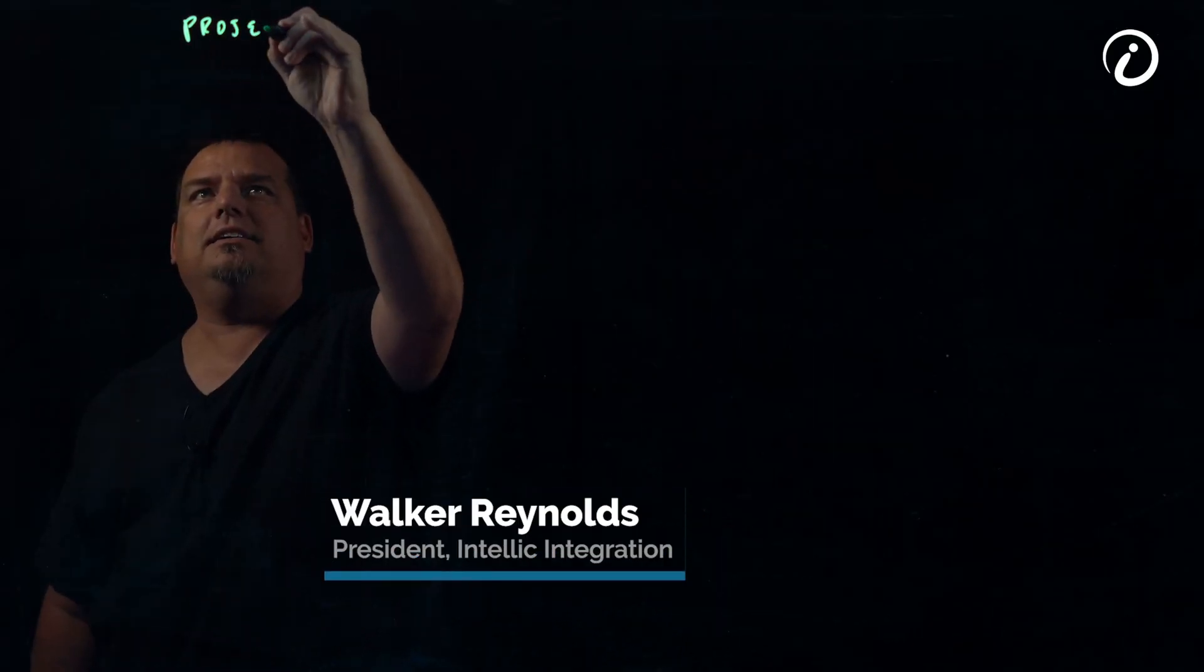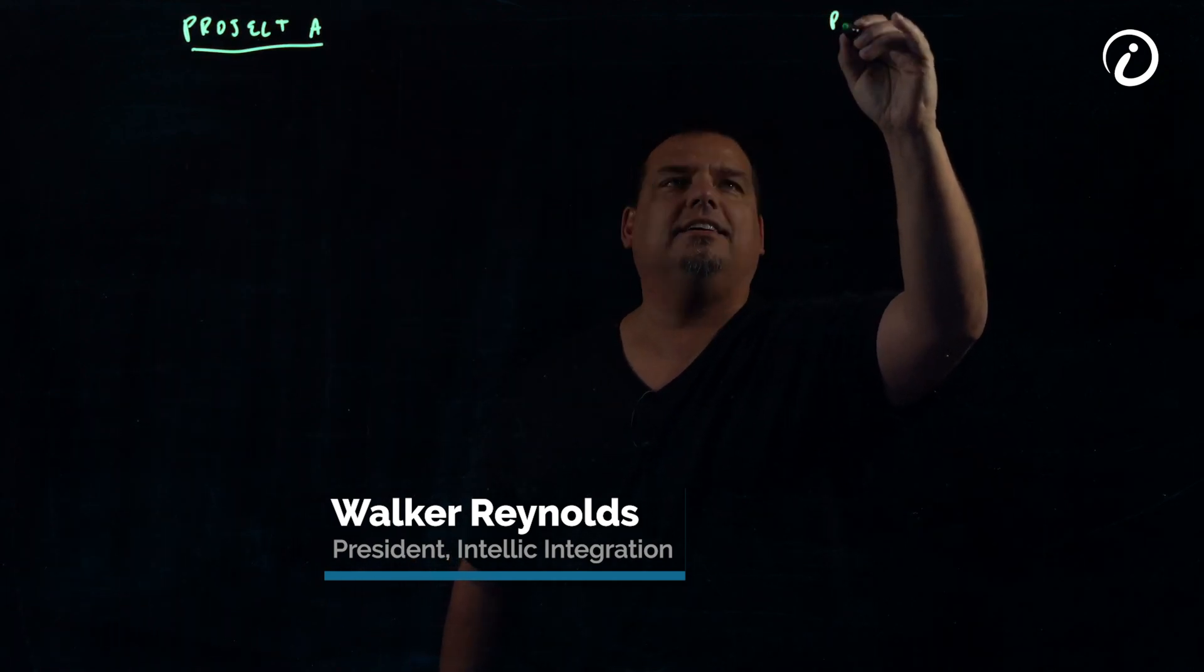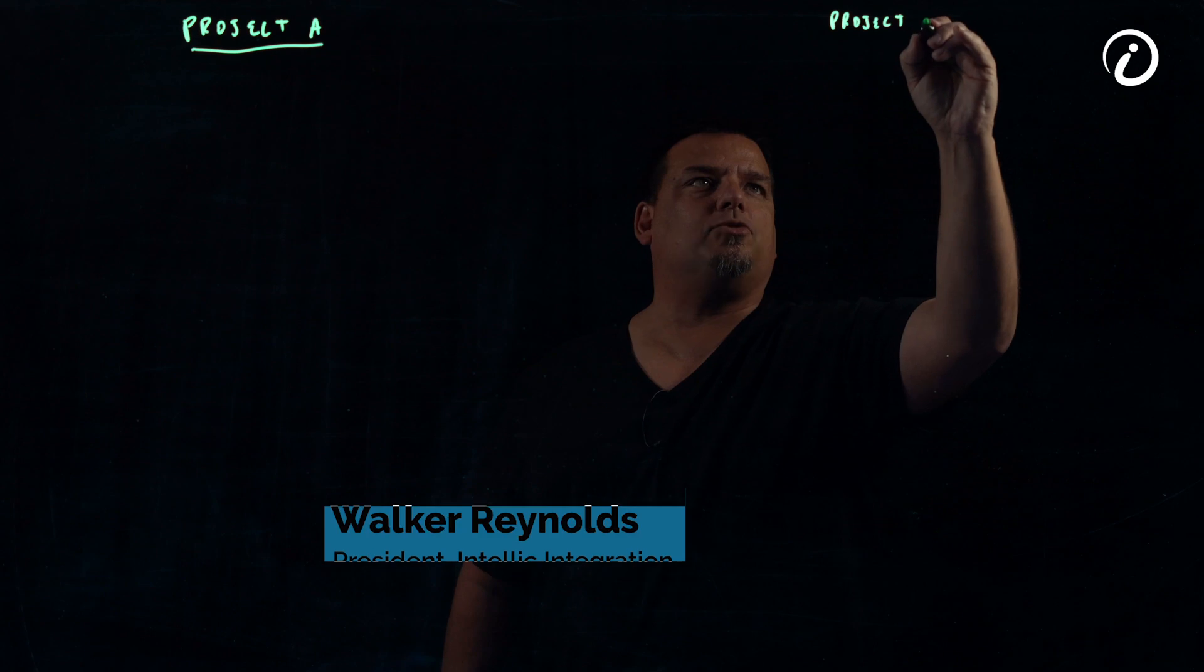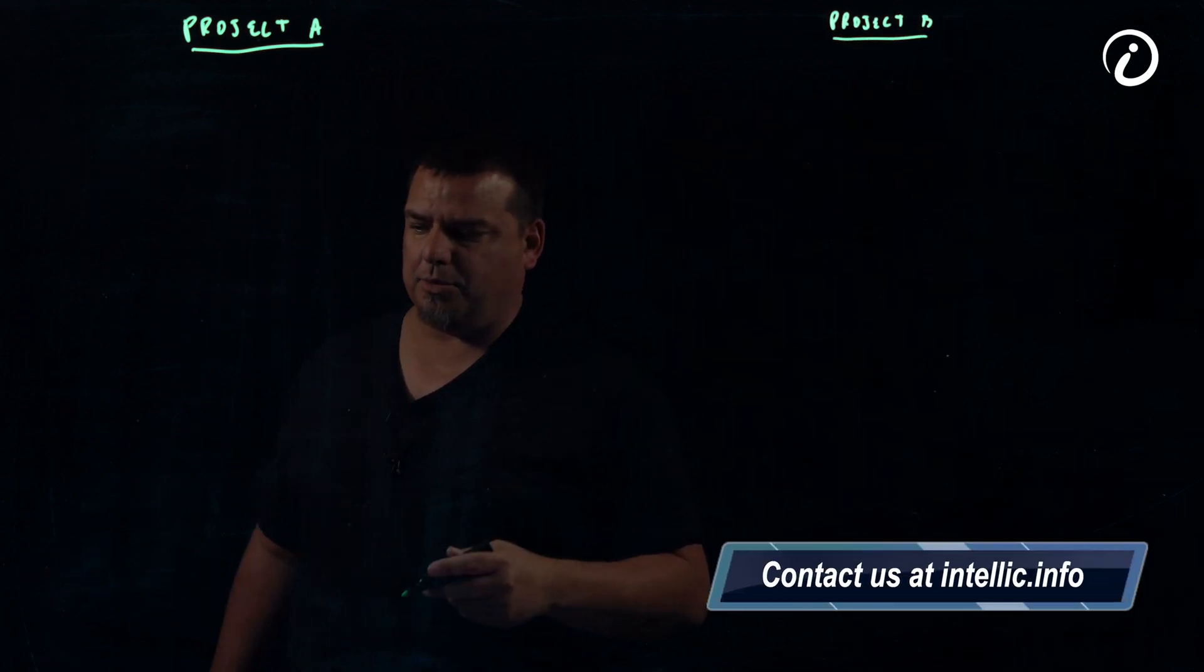All right, so we have two projects here. We're going to call this one Project A, and we're going to call this one Project B. And what I'm going to do is draw the architectures of these two projects out on the board.